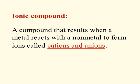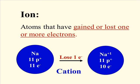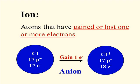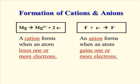An ionic compound is a compound that results when a metal reacts with a non-metal to form cations and anions. Ions are atoms that have gained or lost one or more electrons. Cations lose electrons — your metals will form cations. Anions gain those electrons, and you form ionic compounds.